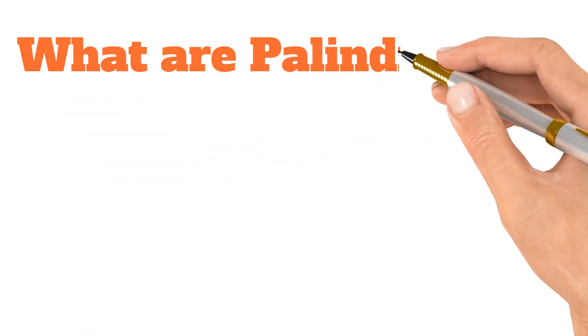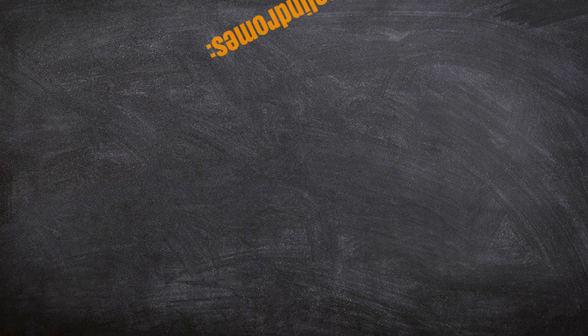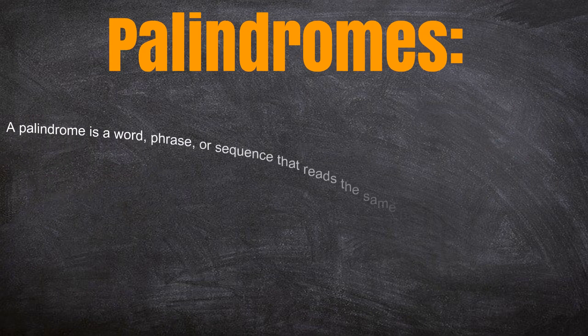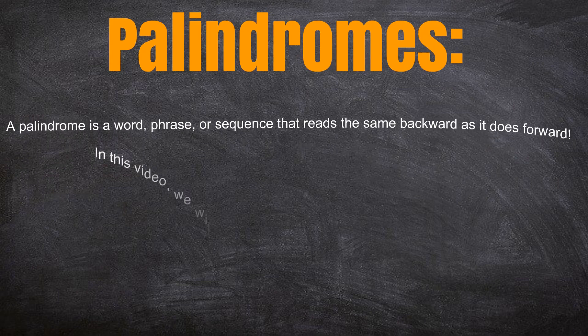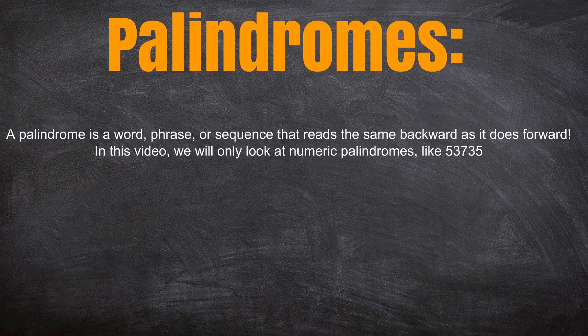What are palindromes? A palindrome is a word, phrase, or sequence that reads the same backward as it does forward. In this video, we will only look at numeric palindromes, like 53,735.